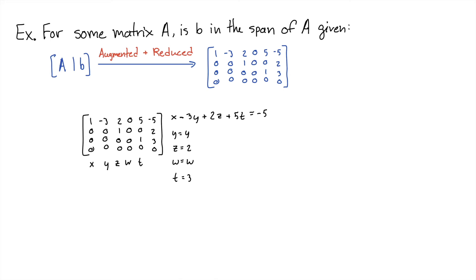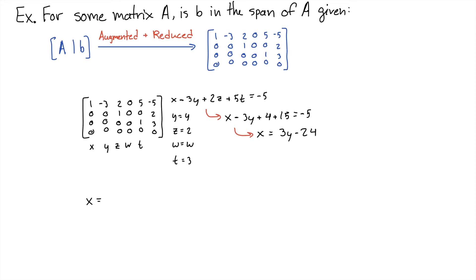These are our linear equations. If you notice, we have a value for Z and T, so we can plug it into this equation up here. We get X minus 3Y plus 4 plus 15 equals negative 5. Then we want to get everything over and just have X equal to all the free variables. So we get X equals 3Y minus 24. Next, we're going to write the equations we found here in for X here. So we have X is 3Y minus 24, Y is Y, Z is 2, W is W, and T is 3.